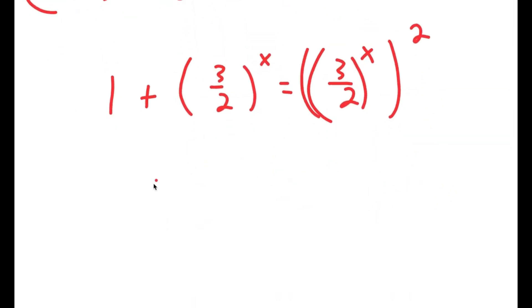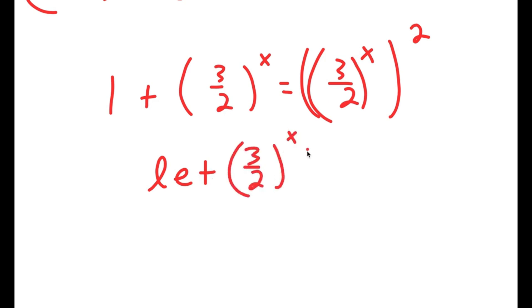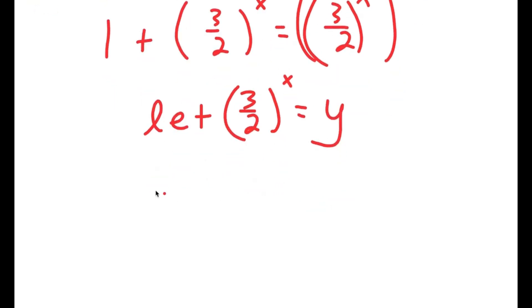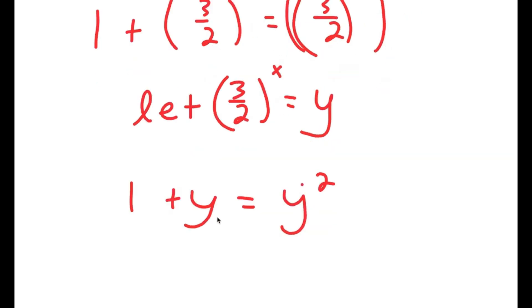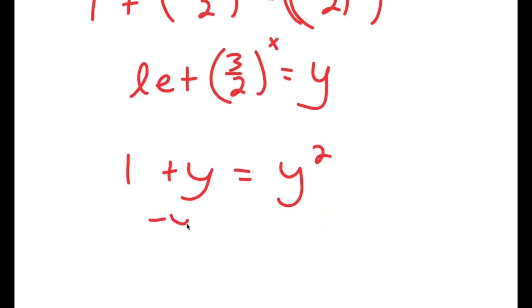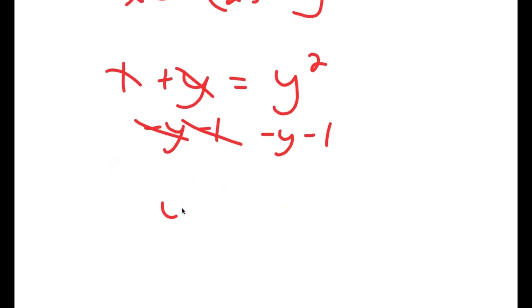So this equals 1 plus 3 over 2 to the power of x, which is equal to 3 over 2 to the power of x, to the power of 2. Now, I'm going to let 3 over 2 to the power of x equal to the variable y. So I get 1 plus y is equal to y squared. And if I subtract y and 1 on both sides, I get y squared minus y minus 1 is equal to 0.